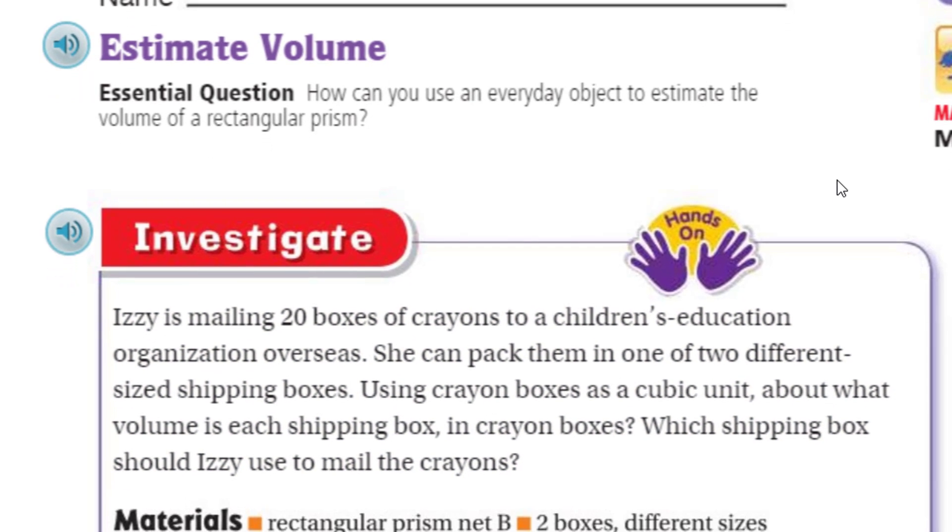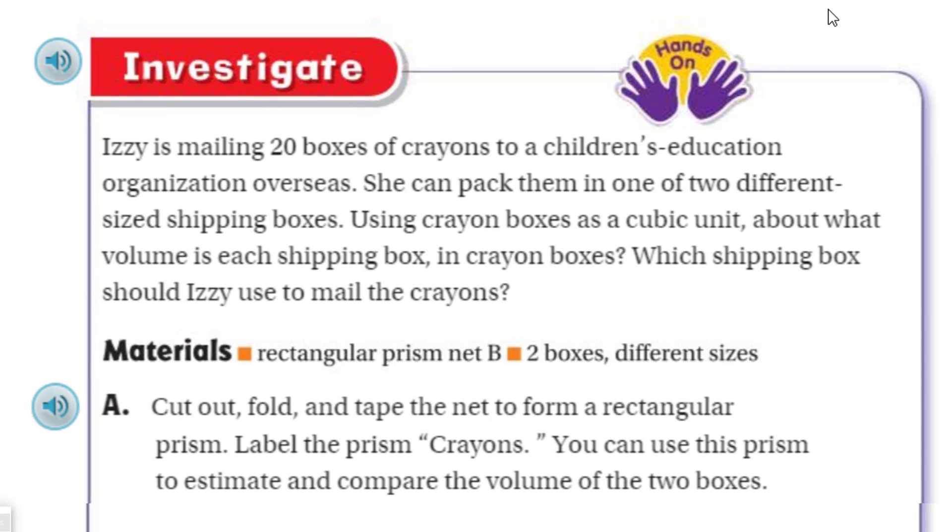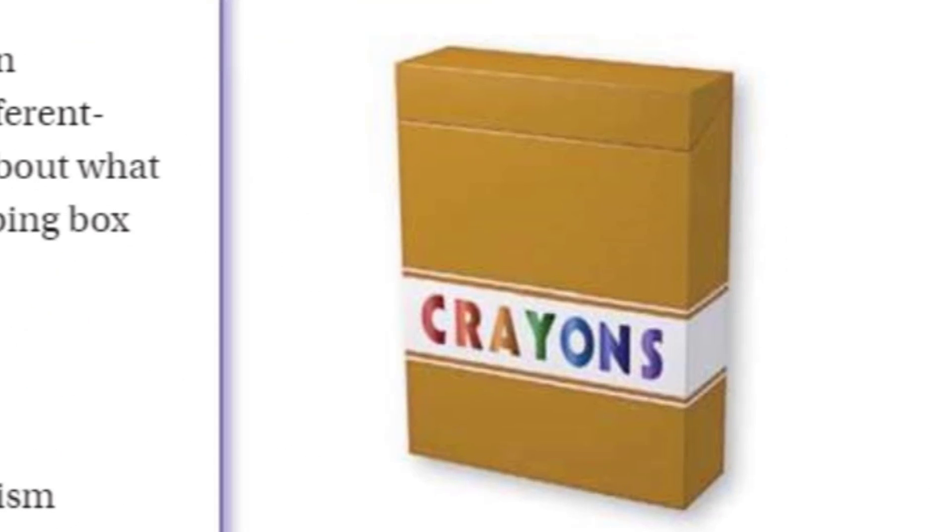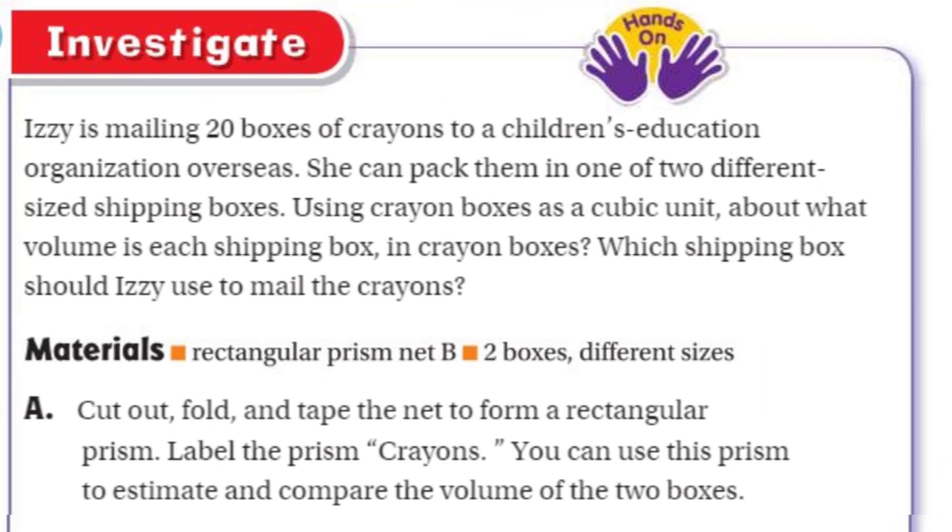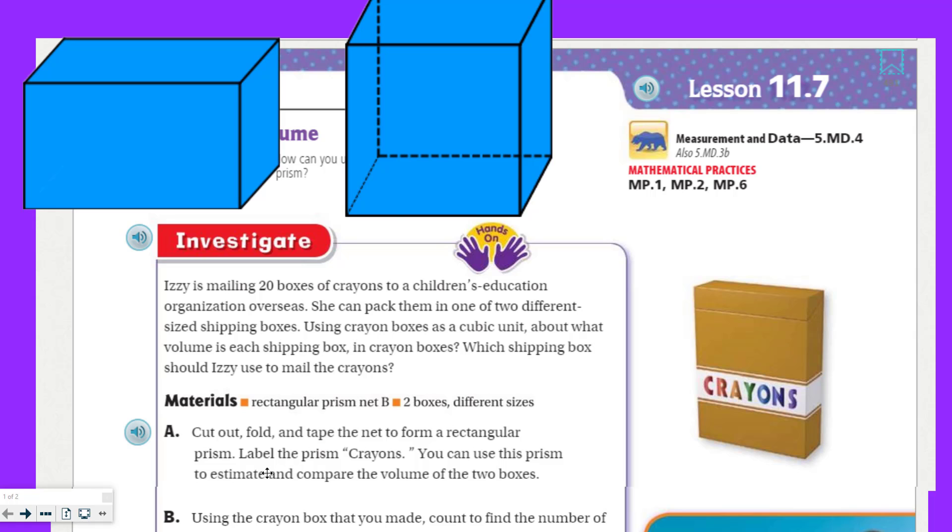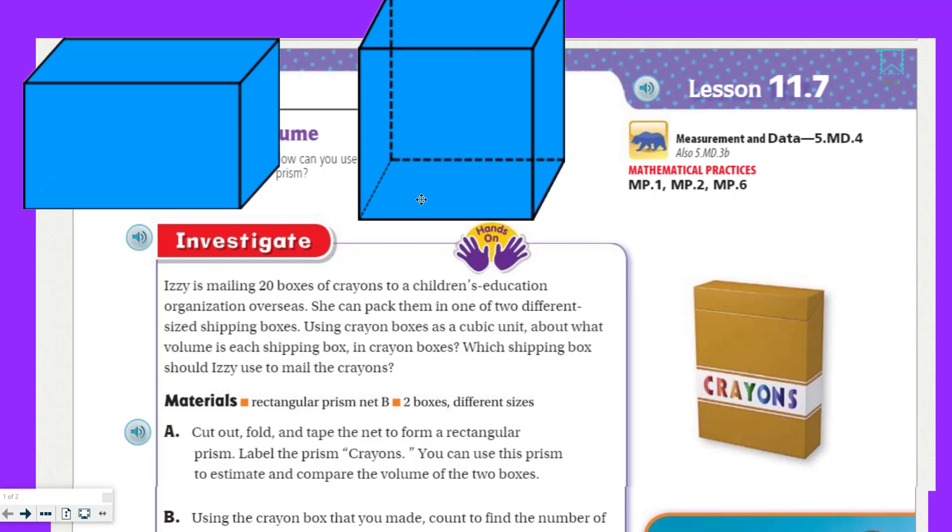So here we're going to need some materials. Just so that we're clear on, again, the problem that we're reading. The crayon box, as you see here, cameraman. Yeah, that's our, that's our, that's our going to be our cubic unit. All right. And so we want to know about how many of these crayon boxes is going to be the volume for each shipping box. All right. So now we come down to materials. We have rectangular prism net B which I don't have. And then two boxes. Different sizes. Which I don't have.